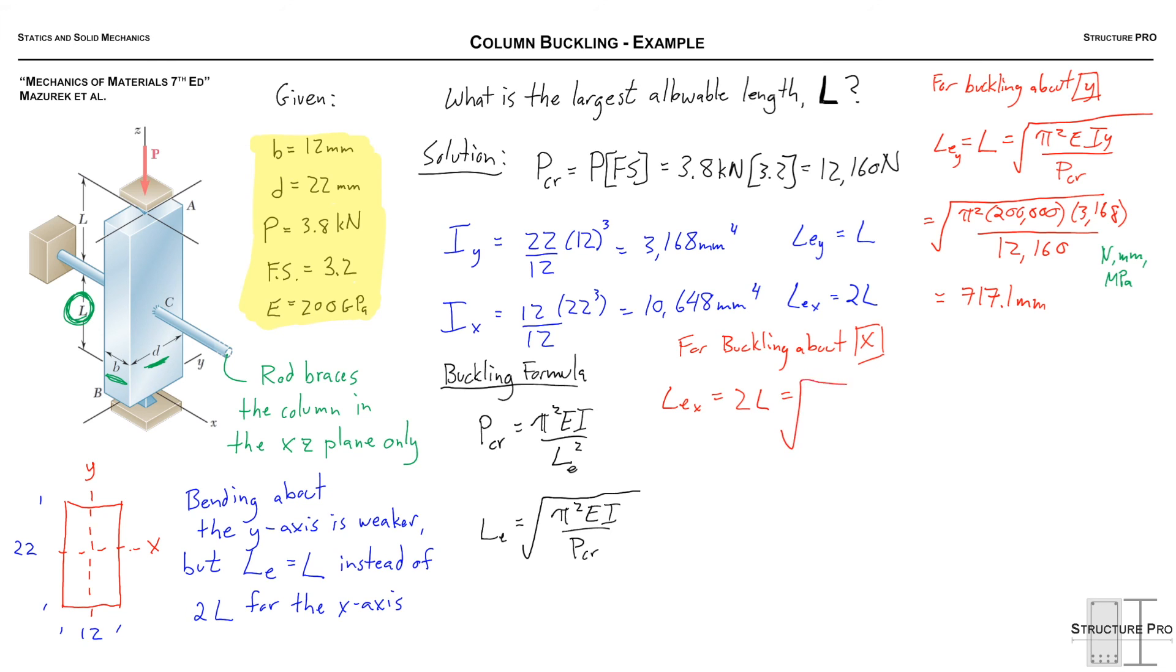So let's do this for the X plane. Buckling about X, LEX is actually 2L because the rod at C does not brace it from buckling.